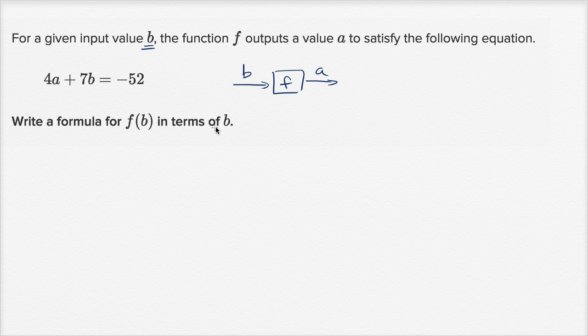Write a formula for f(b) in terms of b. So what we want to do is solve for, if we're given a b, what a does that imply we have to output? Or another way to think about it is, let's just solve this for a, or we could think about a as being a function of b.